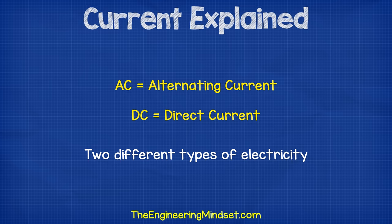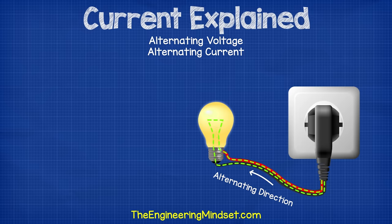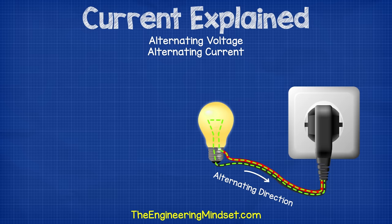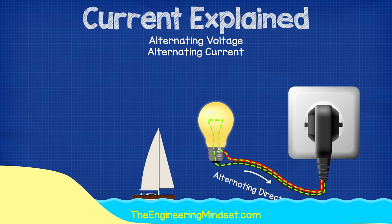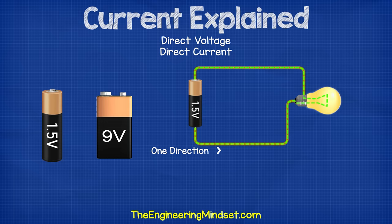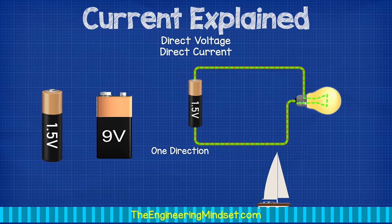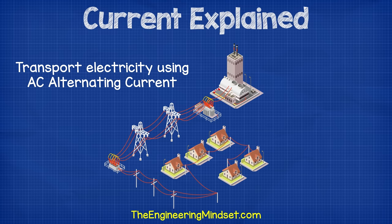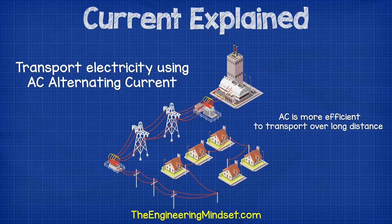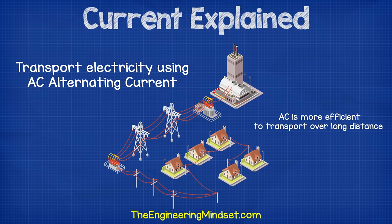AC and DC are different types of electricity. The plugs in your homes will provide AC or alternating current. In this type, the electrons do not flow in a continuous loop — they instead alternate between moving backwards and forwards, just like the tide of the sea. Your electrical devices like laptops and mobile phones will use DC electricity or direct current. In this type, the electrons do flow in only one direction, much like the flow of water in a river. We transport electricity from the power stations in AC alternating current and send this to our cities and homes.